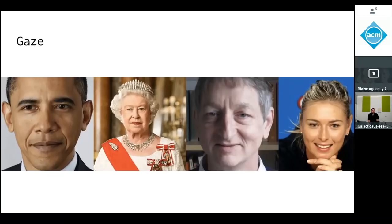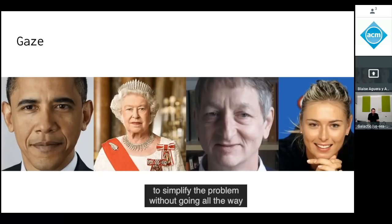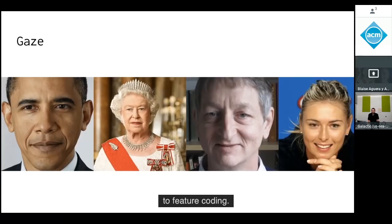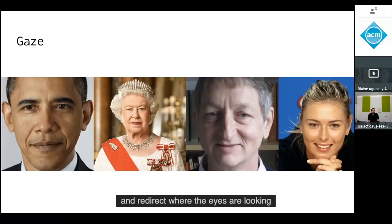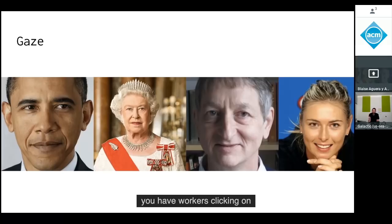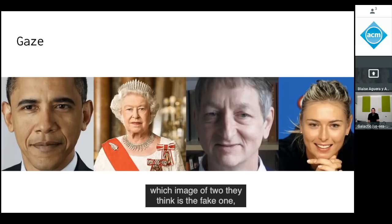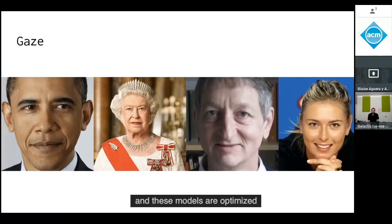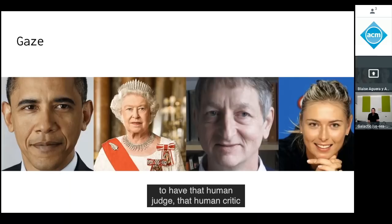Then there was WarpNet — an attempt to simplify the problem without going all the way to feature coding. The idea was to take an image and redirect where the eyes are looking, using a combination of a displacement field on the image and some modifications to pixel intensity. This model was trained to be convincing by having human workers click on which of two images they think is fake, optimizing so that judge can't tell which is real and which is fake.